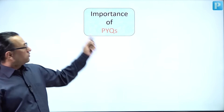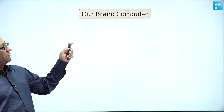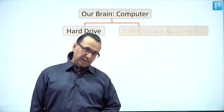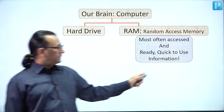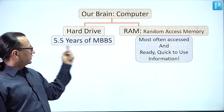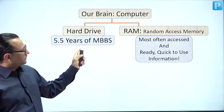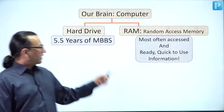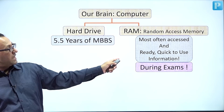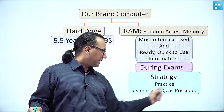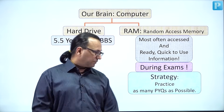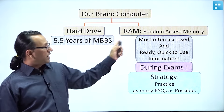Let me give an analogy to understand the importance of previous year questions. Our brain works like a computer — it has a hard drive for storage and RAM, random access memory. It is the RAM we use more often, especially in exams. The hard drive fills with all the information we learn throughout MBBS, but that information is enormous and retrieval is slow — it cannot help in competitive exams conducted in just three to three and a half hours. So the strategy is to practice as many previous year questions as possible, filling your RAM with frequently asked information, readying it for the occasion.